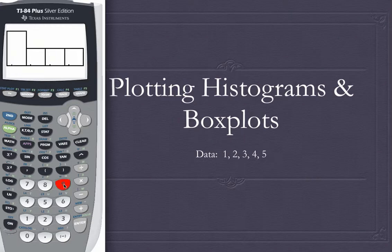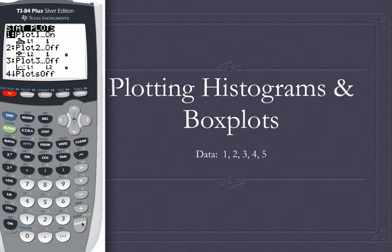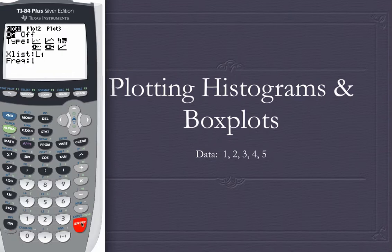Now let's do the box plot. Go back into the stat plot menu and into the first plot, and leave it on, but change it from a histogram into a box plot. There are actually two box plots: the modified option shows two little dots that represent outliers, and the other box plot would not show outliers. I like the one that shows the outliers, so that's the one we'll do.